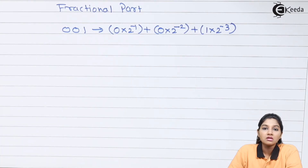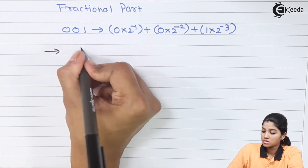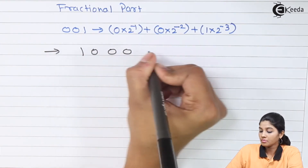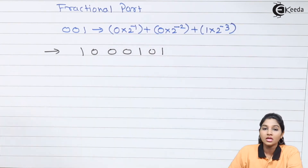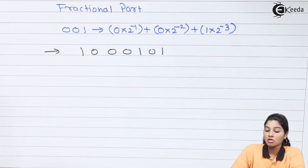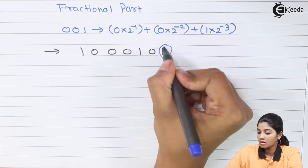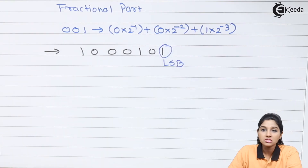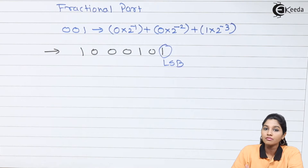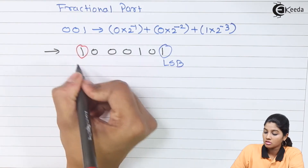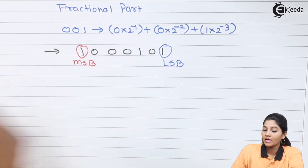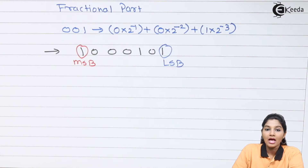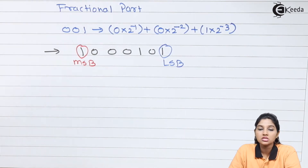In case of the binary number system, if we write a number in terms of 1s and 0s, the term which is present on the right-hand side is called the LSB — that is, least significant bit — and the term on the left-hand side is called the MSB — that is, most significant bit. We can number them as D0 to D7.